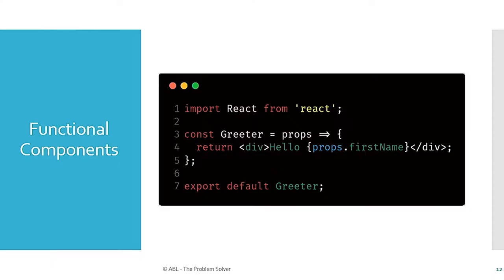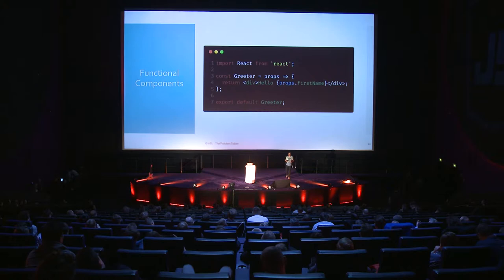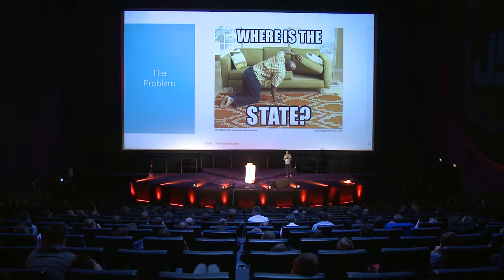Then we got functional components — really simple. Any time you had a class-based component that just had a render function, the React team said you can just use a functional component. No more `this` keyword, because it's just a function. You get the props as a parameter. Really easy to use. But they were called stateless functional components because there is no state. If you needed to add state, your first step was to refactor it into a class-based component. Not hard, but just one of those paper cuts. Same if you wanted to add a lifecycle function.